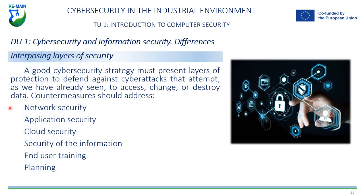A good cyber security strategy should feature layers of protection to defend against cyber attacks that attempt to access, change, or destroy data. Countermeasures should address network security — measures to protect a network of systems from intruders, including wired and wireless connections. Application security processes help protect applications running on-premises and in the cloud; security should be built into applications at the design stage, taking into account how data is handled and user authentication, among other factors.